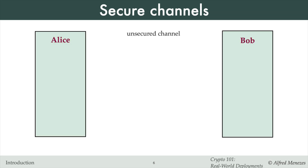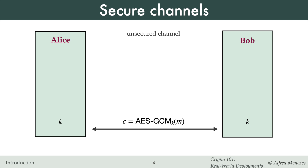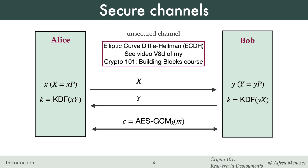Alice and Bob can protect their communications by encrypting and authenticating their data using AES-GCM, which protects the confidentiality and authenticity of the data. To use AES-GCM, Alice and Bob must establish a shared secret key K, ideally using a unique key for each communications session. How can Alice and Bob establish the shared secret key K? One approach is to use the ECDH key agreement scheme, where Alice and Bob exchange randomly chosen elliptic-curve points X and Y, and then derive K from these points.